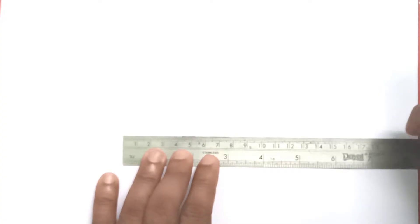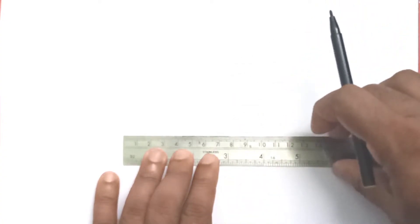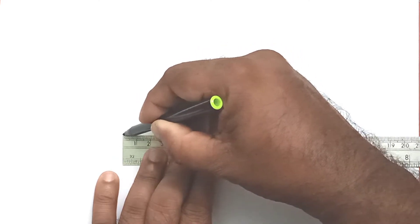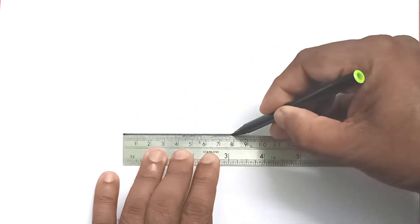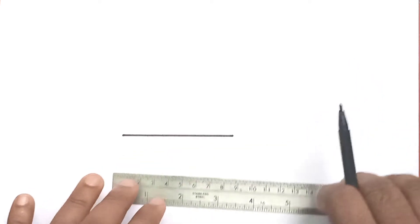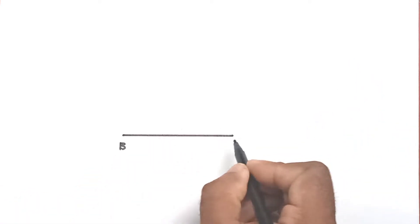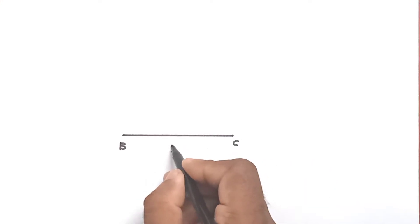First we have to construct ABC. Let's draw BC. BC is equal to 8 cm. This is 8 cm.